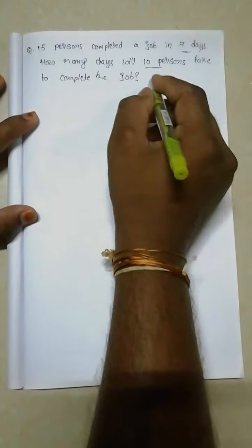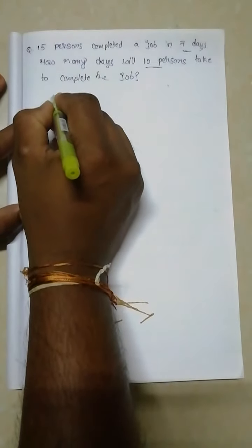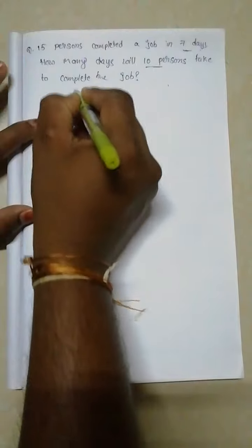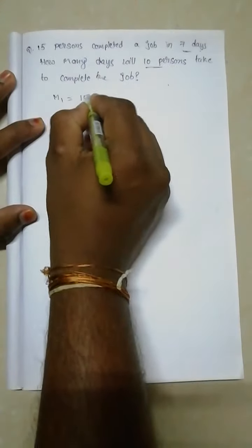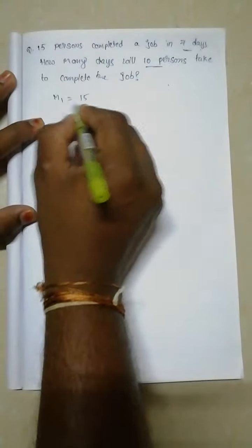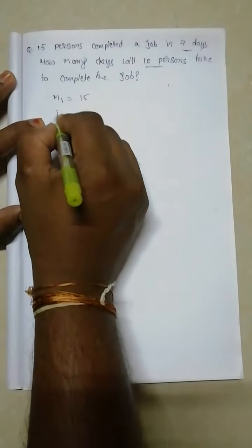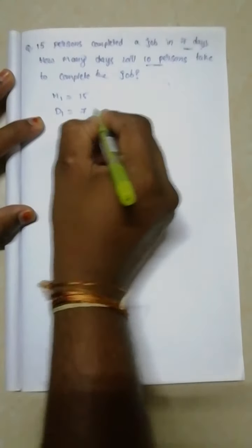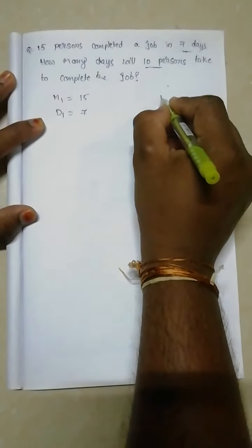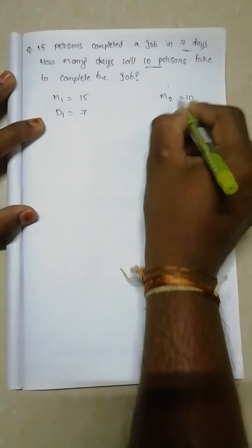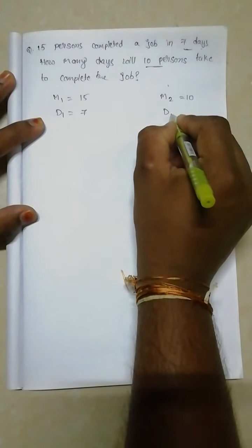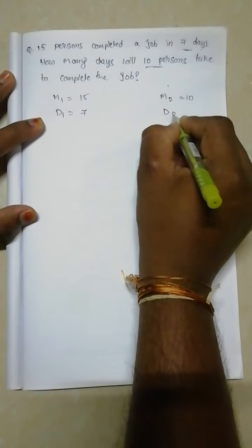Let us write the given information. In the first case, 15 persons will complete the work in 7 days. We have only 10 persons now. To complete the same work with 10 persons, how many days are required? That we need to find out.